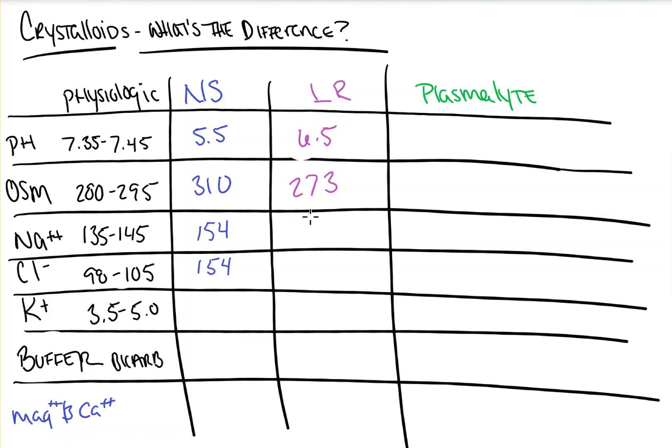It has a sodium of 130 and it has a chloride of 109, which is a better electrolyte profile than normal saline.